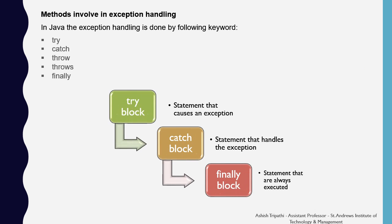In Java, exception handling is done using five keywords: try, catch, throw, throws, and finally. The try block contains statements that cause an exception. The catch block contains statements that handle the exception. The finally block contains statements that are always executed, regardless of whether an exception occurs.